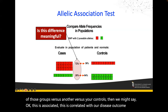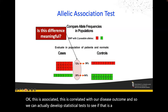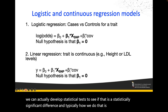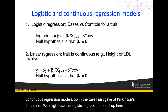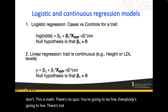We can develop statistical tests to see if that is a statistically significant difference. Typically we do that through logistic and continuous regression models. In the case of Parkinson's versus not, we might use a logistic regression model. There's not a whole lot of math in the presentation, so don't worry.